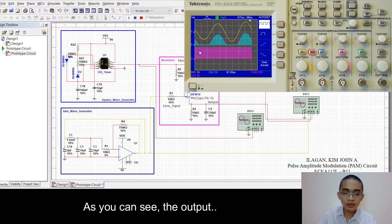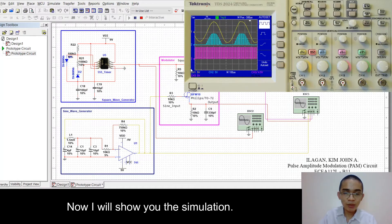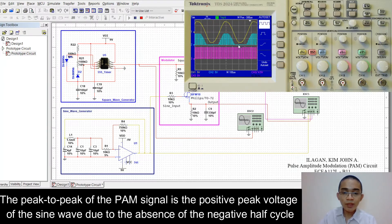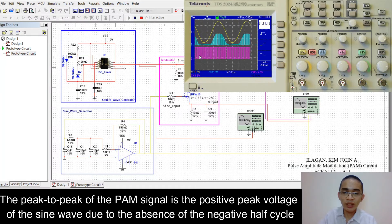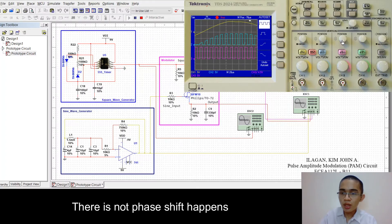As you can see, the output of the modulator is a single polarity PAM signal, being at zero voltage when the analog signal is negative. The peak-to-peak of the PAM signal is the positive peak voltage of the sine wave due to the absence of the negative half cycle. As you can see, there is no phase shift.